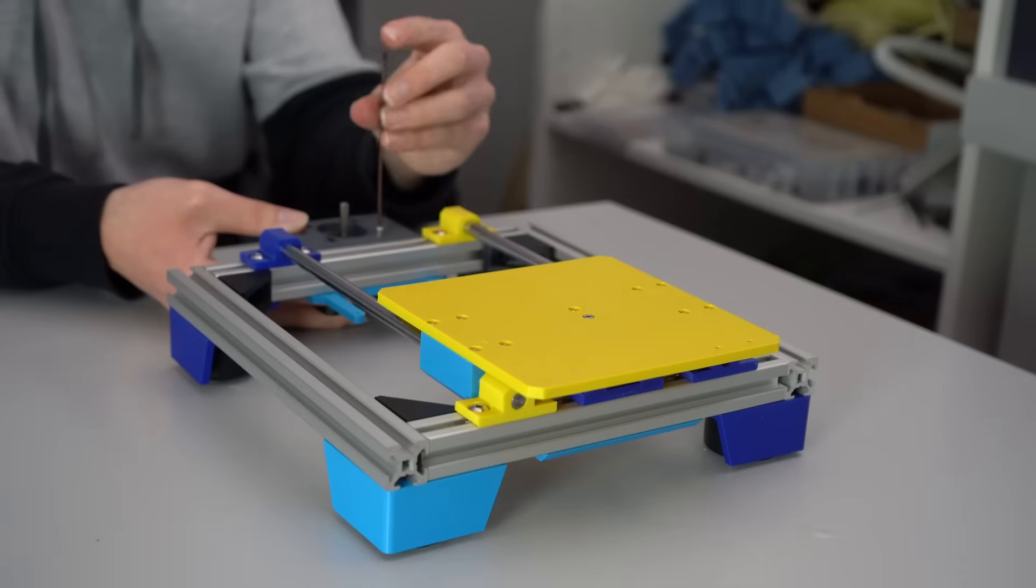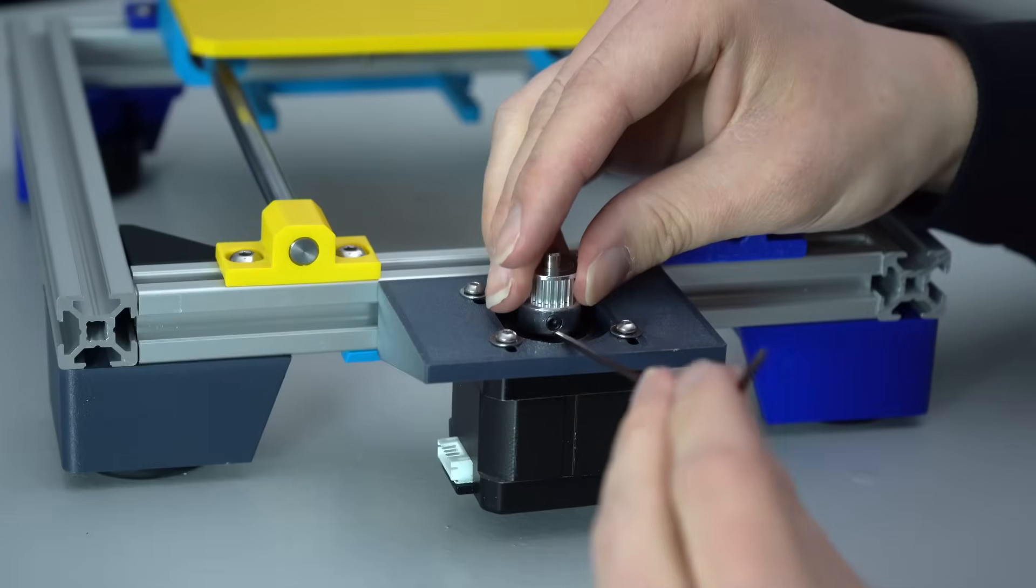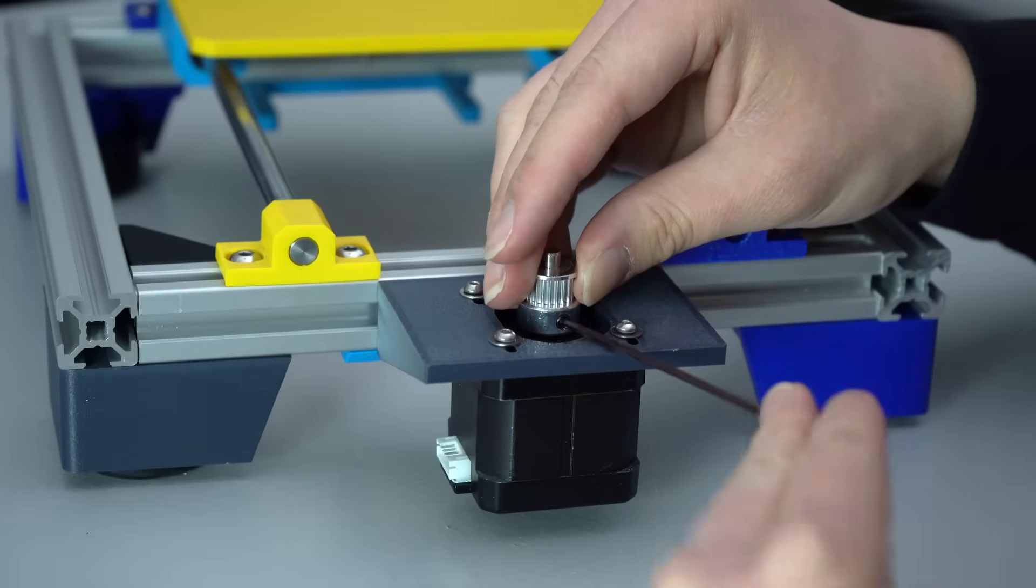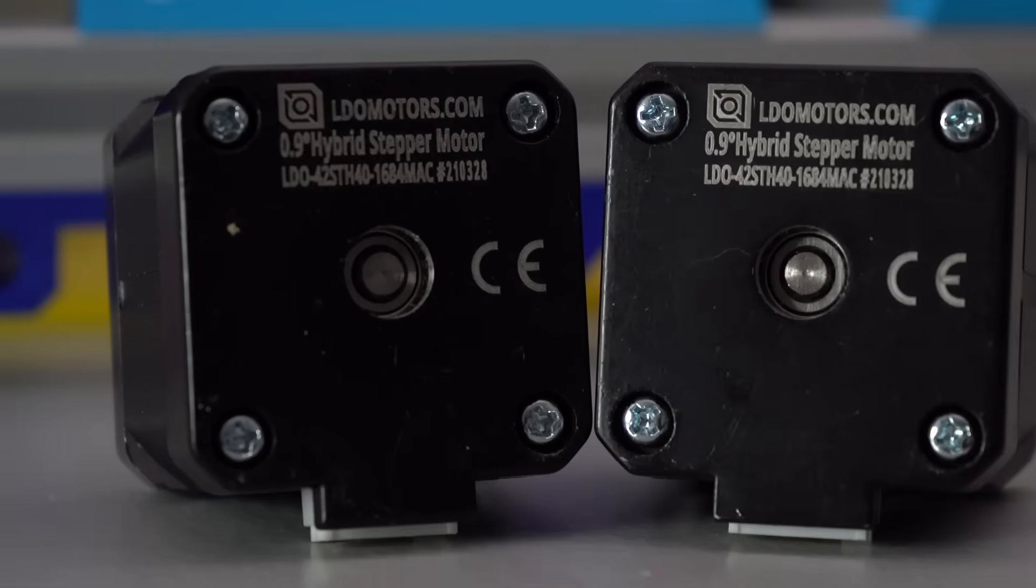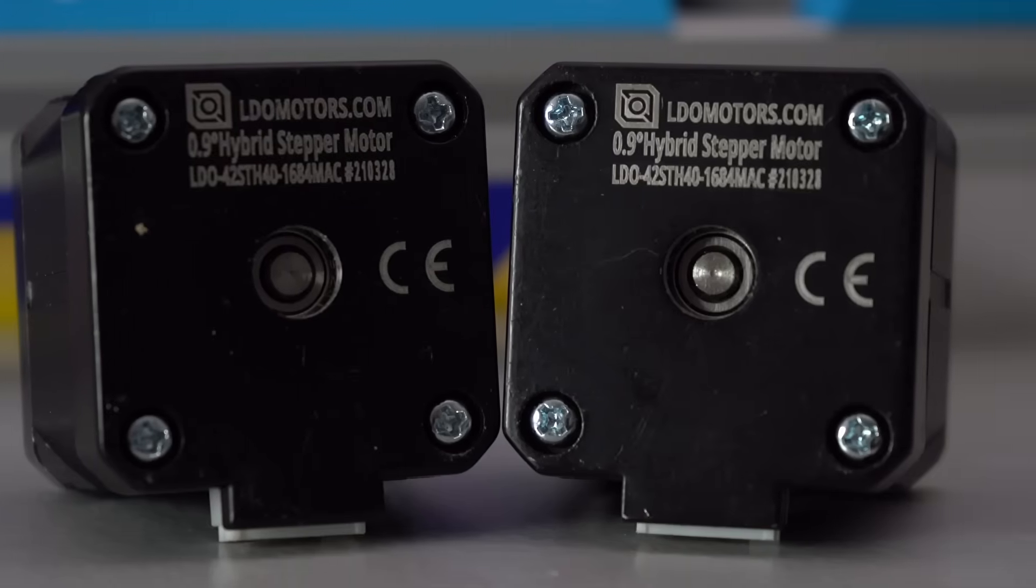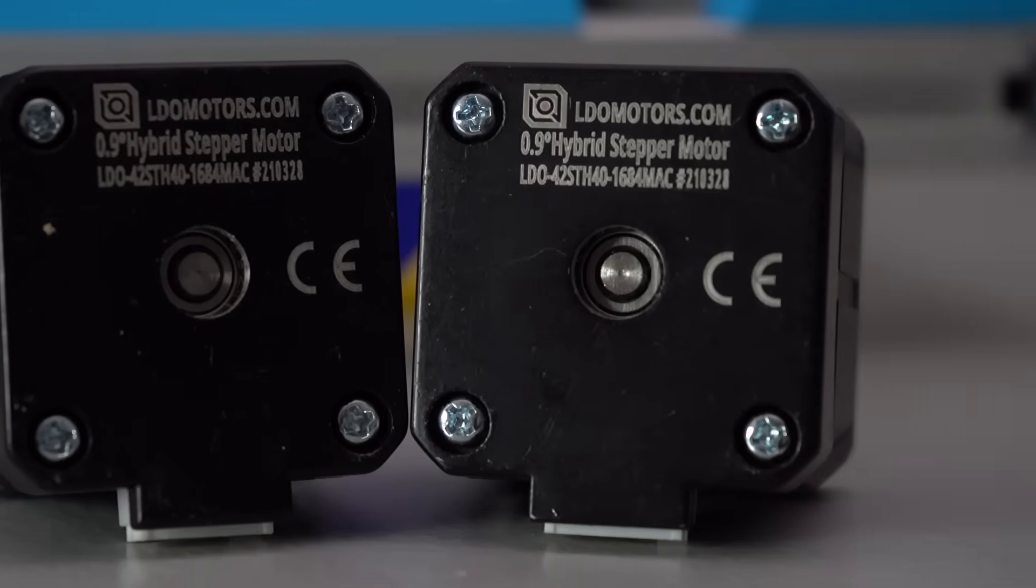From there, screw the motor into the motor mount, put a pulley on the motor shaft, and you're ready to run your belts. I'm going to be using these LDO 1684 motors for this build, but basically any NEMA 17 motor will work.